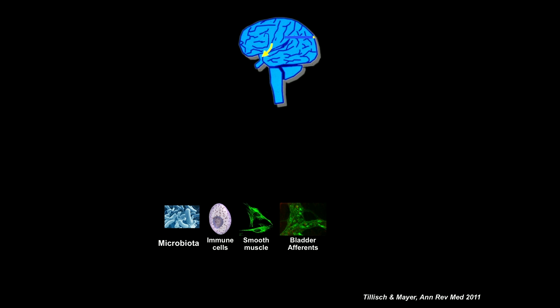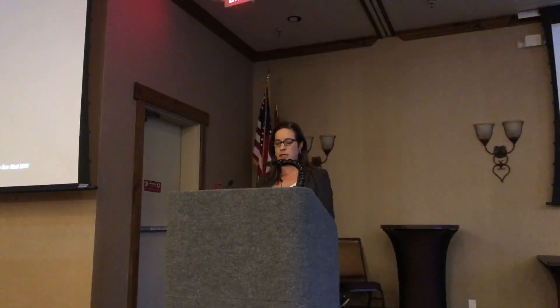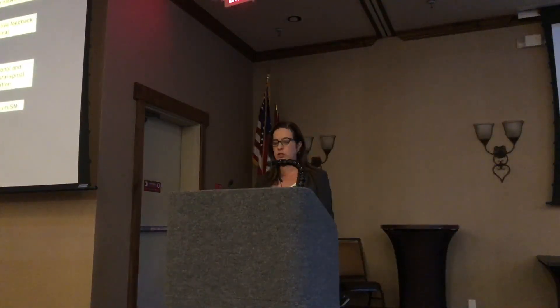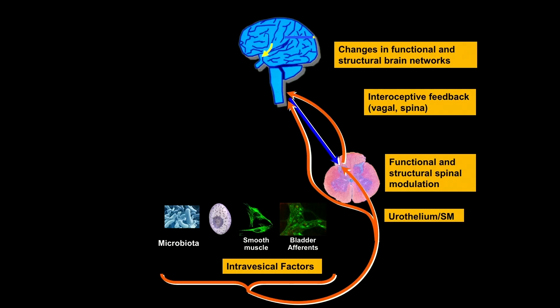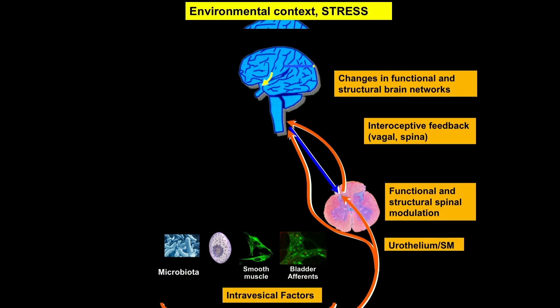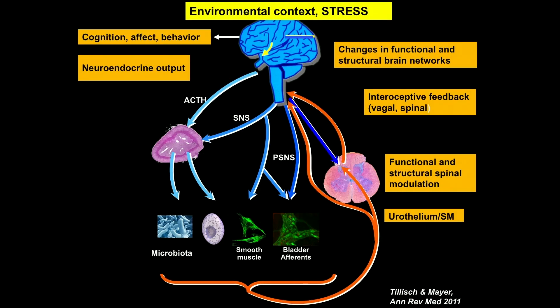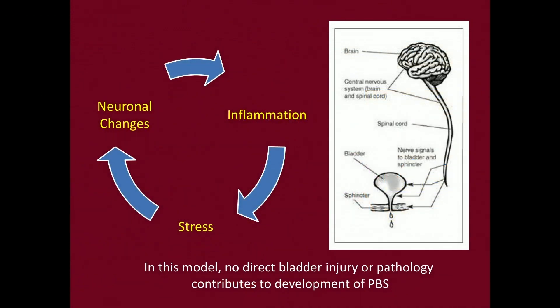In this paradigm, the brain is very much associated with the bladder — with the afferents, the smooth muscle, the immune cells — and we now know more and more about how the microbiota might be related both to the brain and to function. Changes in brain function and structure mediated through the spinal cord can directly affect the periphery, and peripheral symptoms, insults, infections, and trauma can also up-regulate the whole system, creating a cycle that maintains neuronal changes, inflammation, and stress in a continuous loop.